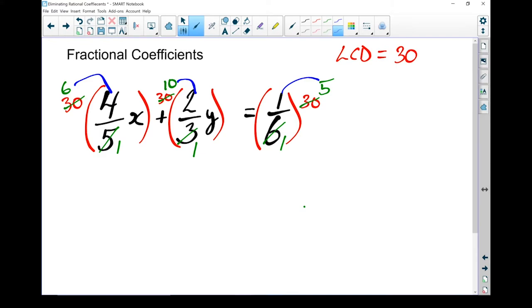So 6 times 4 gives me 24x. I've got a 1 on the bottom, and I don't need to bother writing that in. My next term, 10 times 2 gives me 20. I've still got my y, and my equals sign. And on the other side, I've got 5 times 1 equals 5. I now have essentially the same equation without the rational coefficients. It will draw the same line on a graph, but it's a little bit easier to work with.